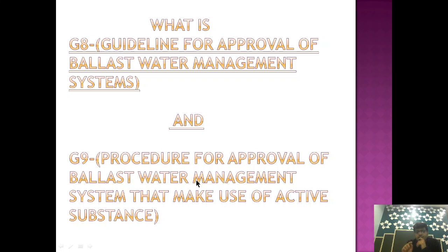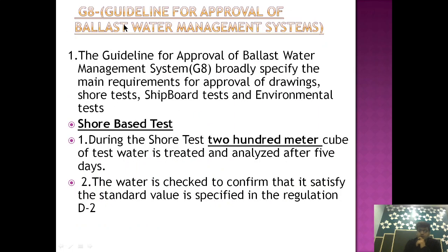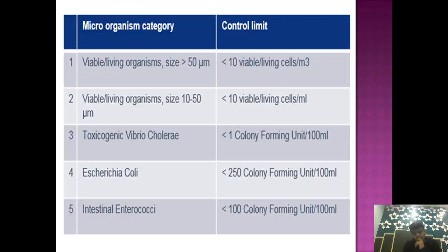The first difference is that if you are using active substance in the ballast water treatment system, in that case you have to take both approval of G8 and G9. If you are not using active substance, then you have to only take the approval of G8. So basically G8 is the guideline for approval of ballast water management system, which talks about the standard which a ballast water treatment system should undergo before being given a license for the approval certificate.